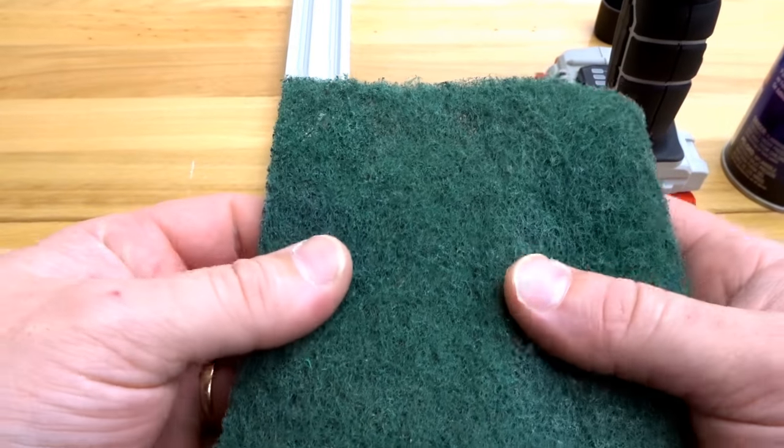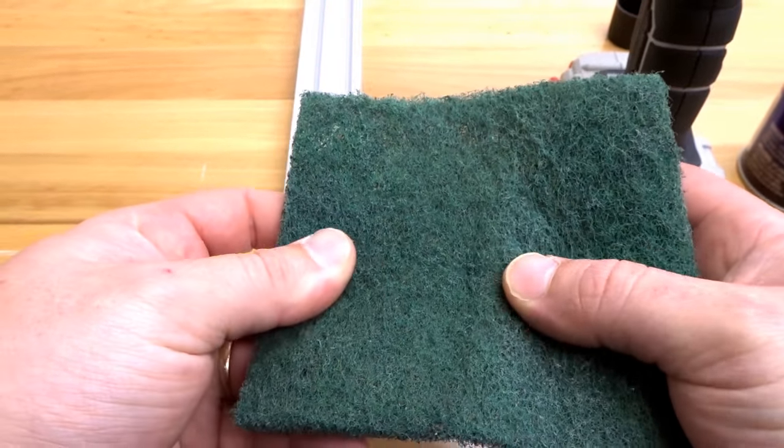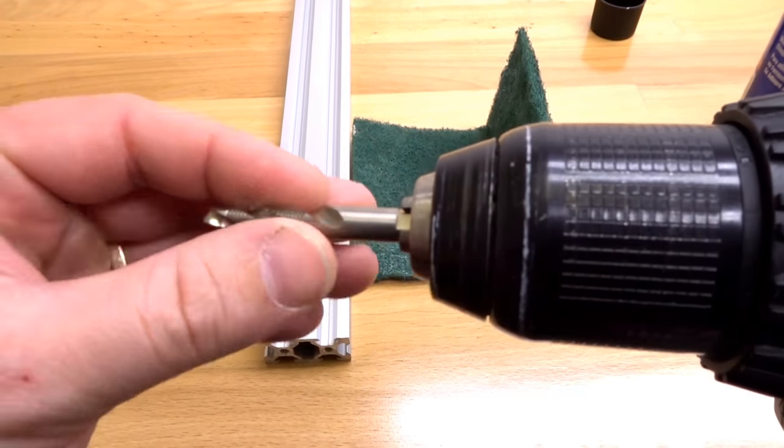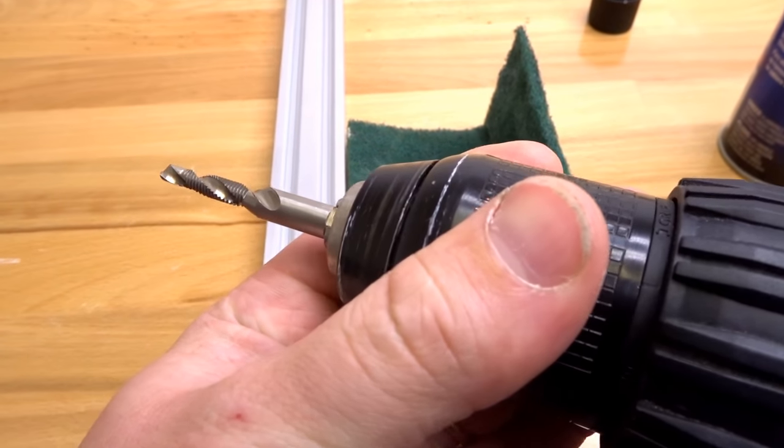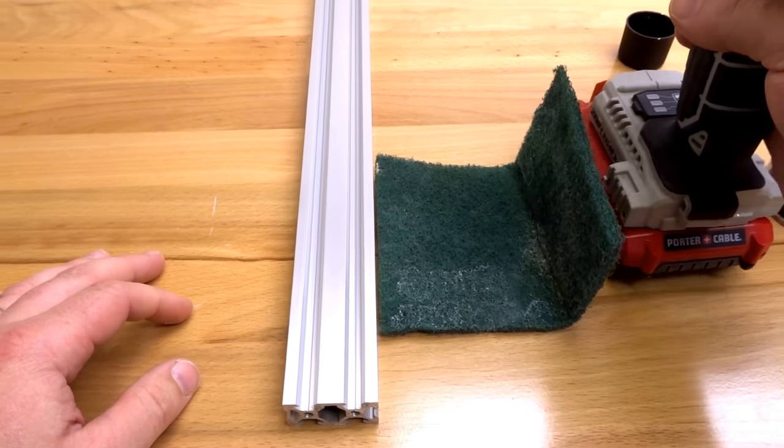In this process we're going to need something with a little rigidity so we can wipe off our drill tap as well as our drill with our tap already inside. We're also going to need some cutting oil.